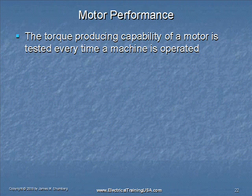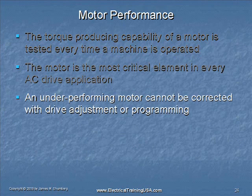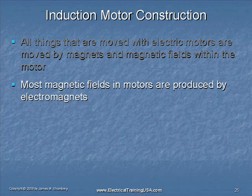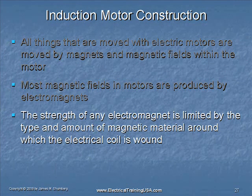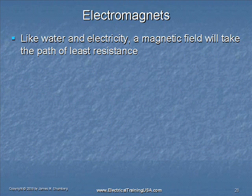The torque producing capability of a motor is tested every time a machine is operated. An underperforming motor cannot be corrected with drive adjustment or programming. All things that are moved with electric motors are moved by magnets and magnetic fields within the motor. Most magnetic fields in a motor are produced by electromagnets. The strength of any electromagnet is limited by the type and amount of magnetic material around which the electrical coil is wound. Like water and like electricity, a magnetic field will take the path of least resistance.